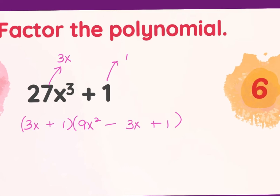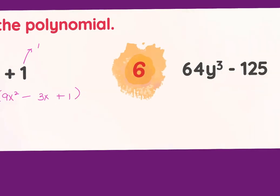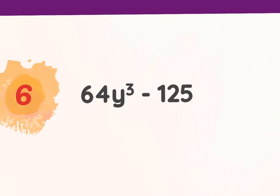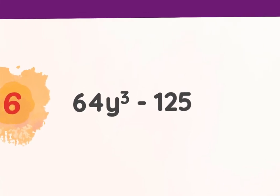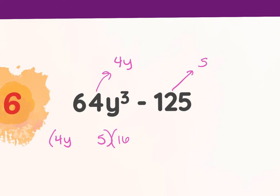For problem 6, the cube root of 64y³ is 4y and the cube root of 125 is 5. So the first parentheses is (4y − 5), then square 4y to get 16y², multiply to get 20y, square the 5 to get 25, and apply same, opposite, always positive.